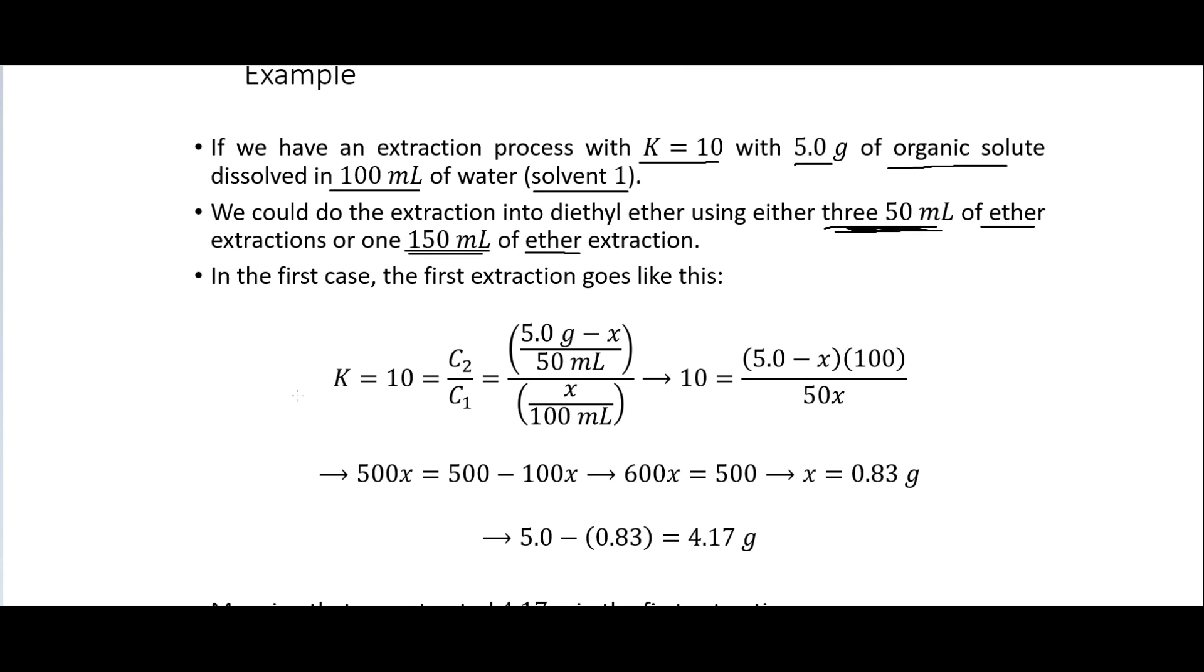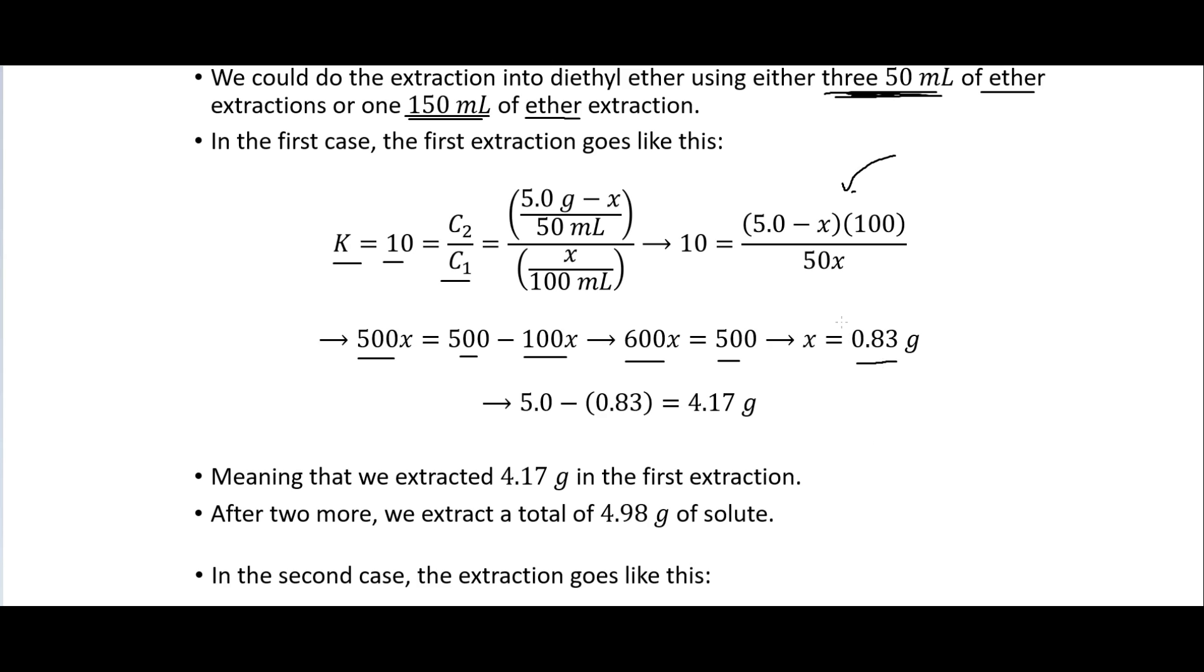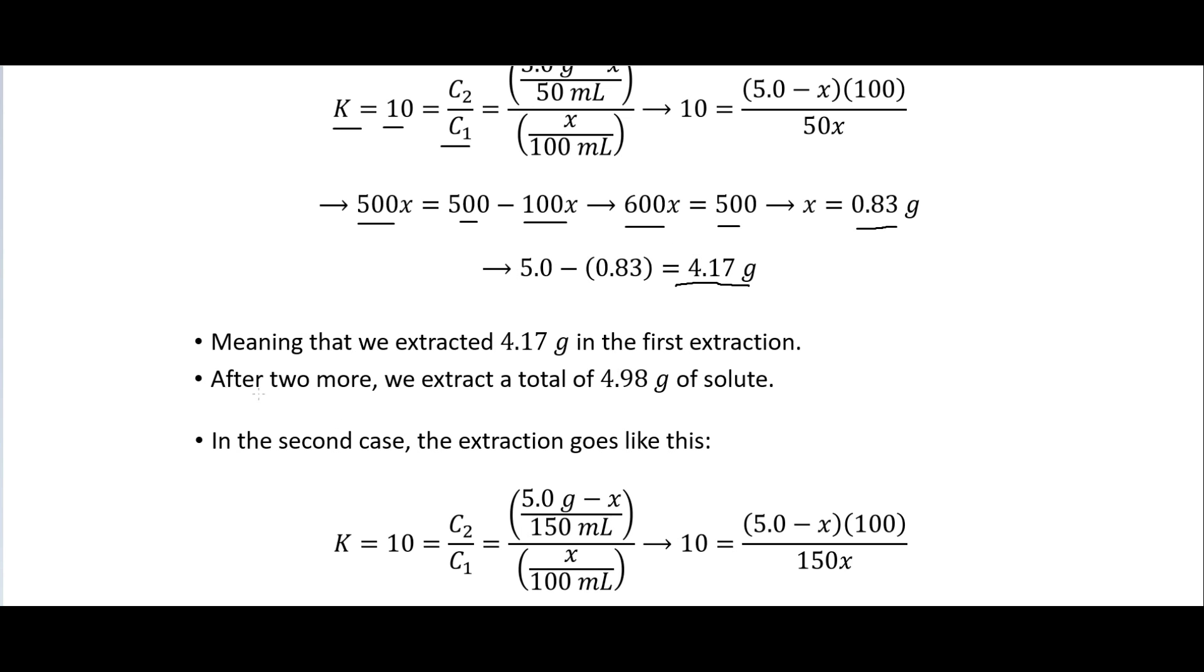So in the first case we have this. So our K is equal to 10 which is equal to the ratio here of our solute. And so when we plug those in we get this. We do some algebraic manipulation. So we get 500X equals 500 minus 100X which is just 600X equals 500. So our X equals 0.83 grams. And so that is how much is left in the solvent after we do the extraction. So we end up recovering 4.17 grams from the extraction. So after two more of those, so we do that again and again two more times, and so we end up getting 4.98 grams out of our 5 grams of solute there.